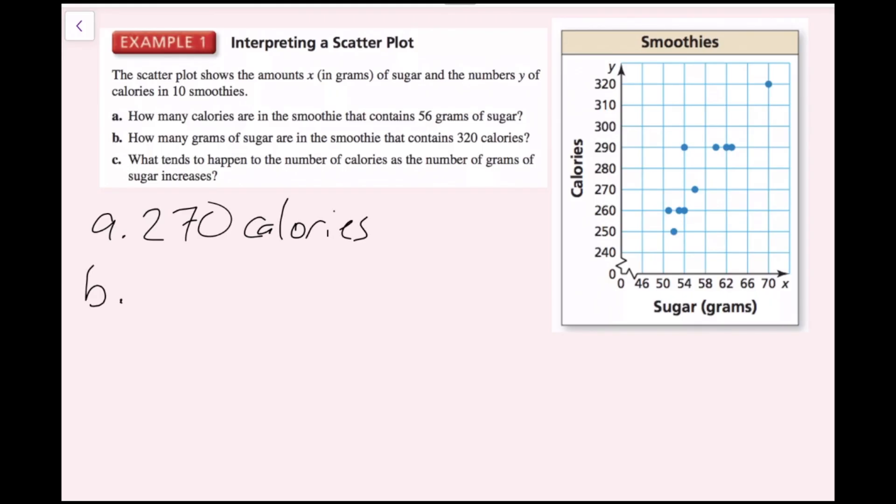Part B asks, how many grams of sugar are in the smoothie that contains 320 calories? Now we're talking about calories, that's the y axis. I'll go up to 320 and there's only one ordered pair at this y value and the x value is 70. So the 320 calorie smoothie has 70 grams of sugar.